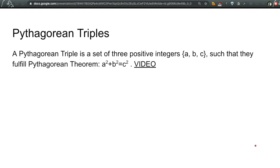In this video we are going to talk about the concept of Pythagorean triples. A Pythagorean triple is a set of three positive integers a, b, and c such that they fulfill the Pythagorean theorem, so a² + b² = c². They have to be integers, meaning basically whole numbers, and since it's also positive...